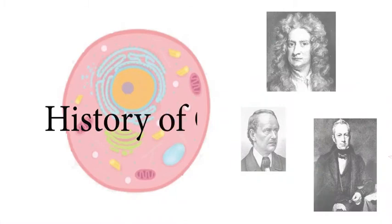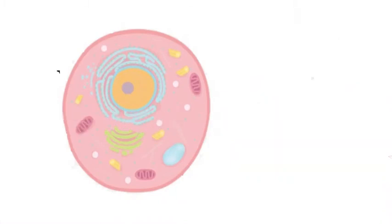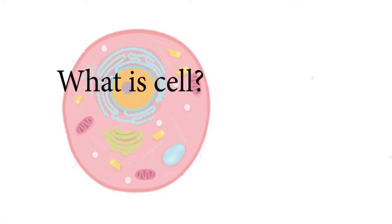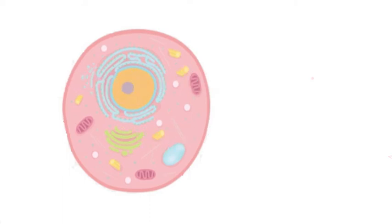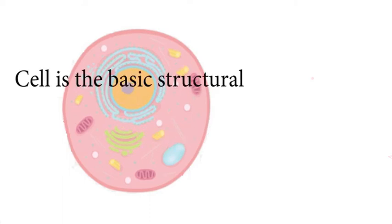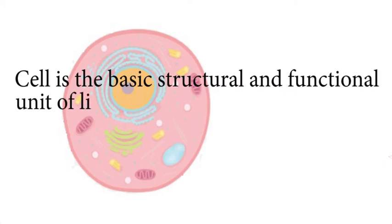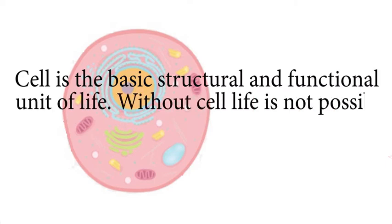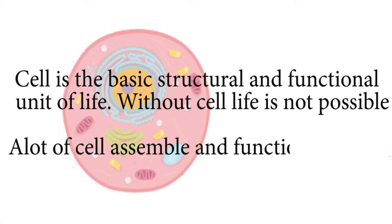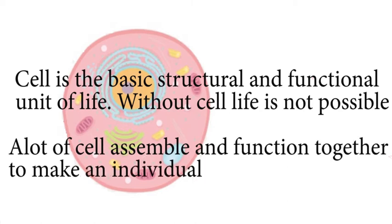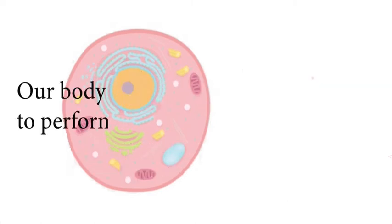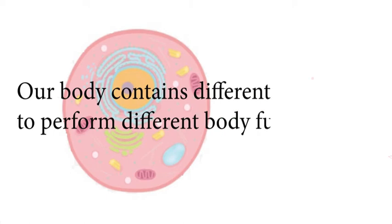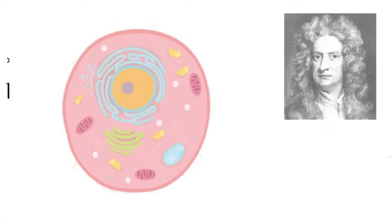In this video we will discuss the history of cell theory, but before that you must know what a cell is and why it is important in human life. Cell is the basic structural and functional unit of life — without cell, life is not possible. A lot of cells assemble and function together to make an individual, and our body contains different types of cells to perform different body functions.